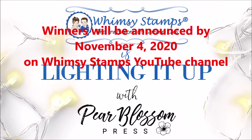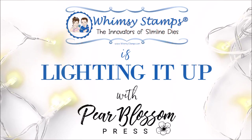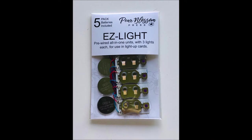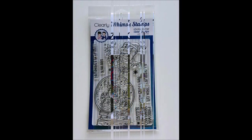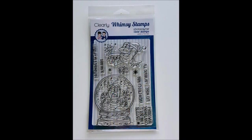Now let's get along to my project. For the sake of time I'm going to try to make this quick, but I'll make sure you don't miss any important details. I'm going to be making a card using these Easy Lights from Pear Blossom Press and the Totally Snowy Stamp Set from Whimsy Stamps. Now let's head on over to my craft table and get started.